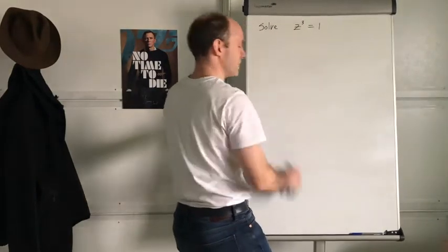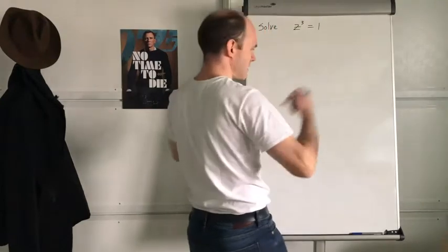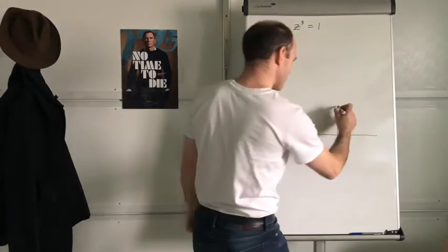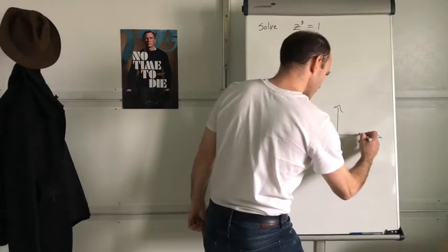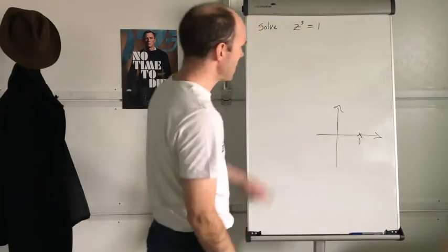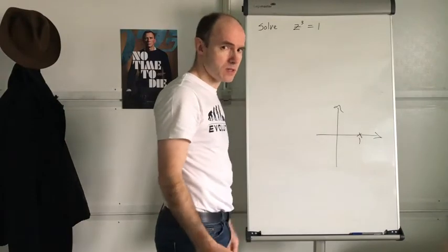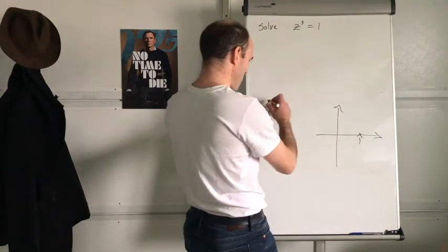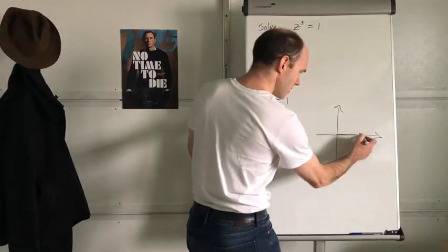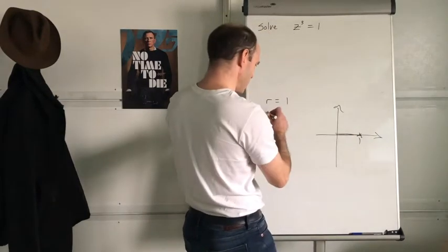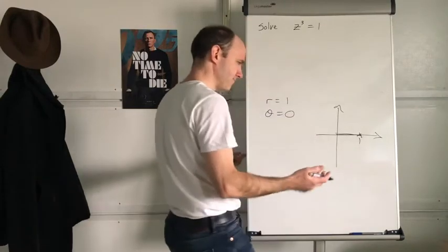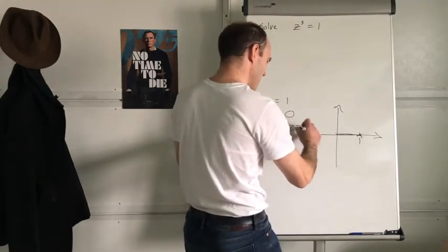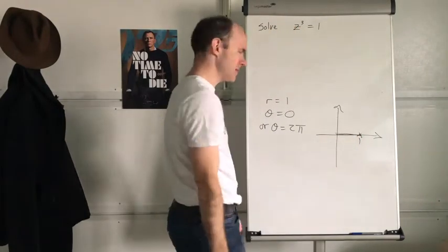So let's have a look at doing that. Where does this lie on the Argand plane? Argand diagram. One — it's there, isn't it? How do you write that in modulus-argument form? Well, r of course is just 1, because that's the modulus of it. And the argument is just 0, or you could say the argument is equal to 2π.